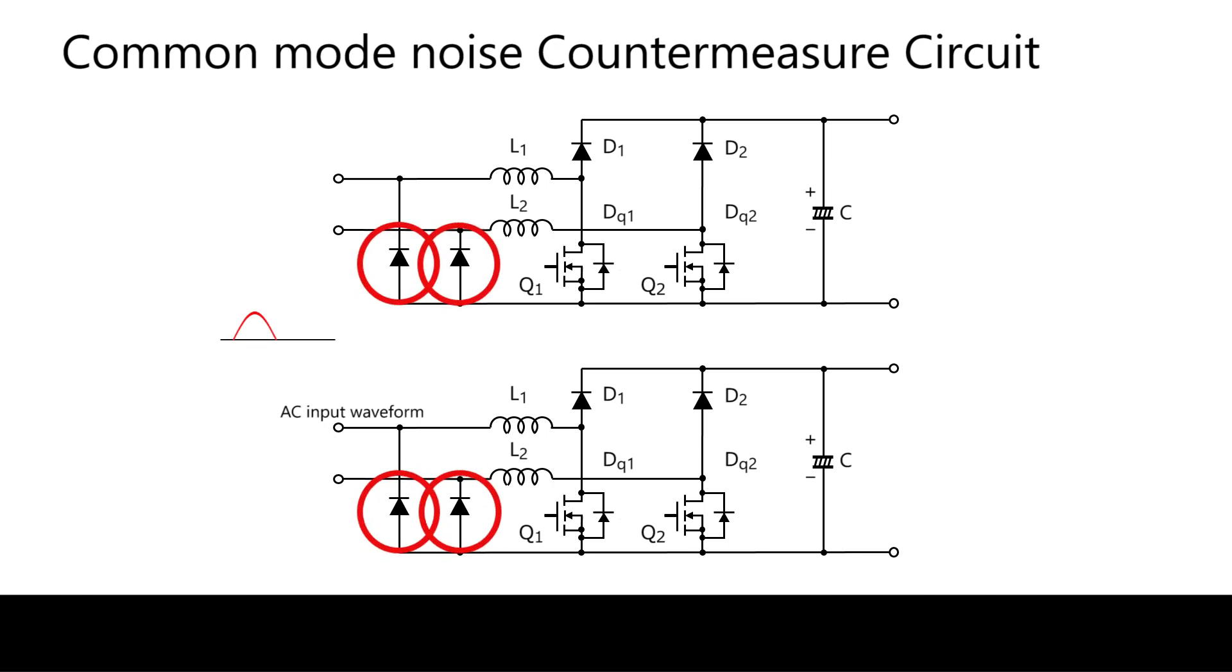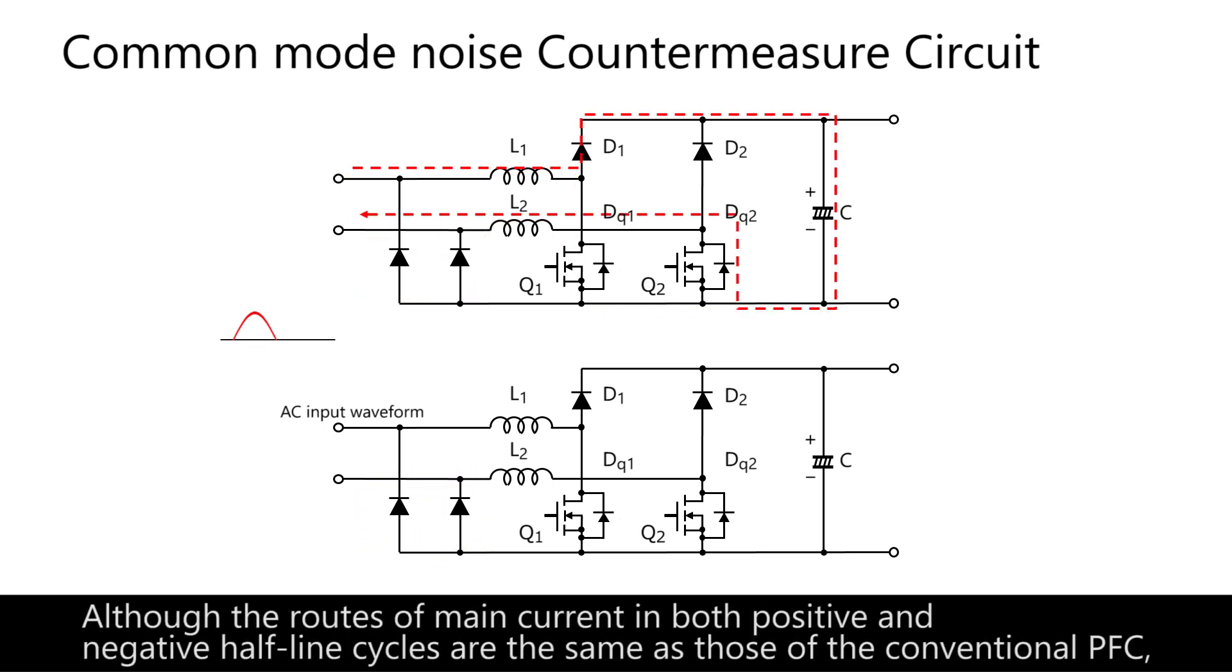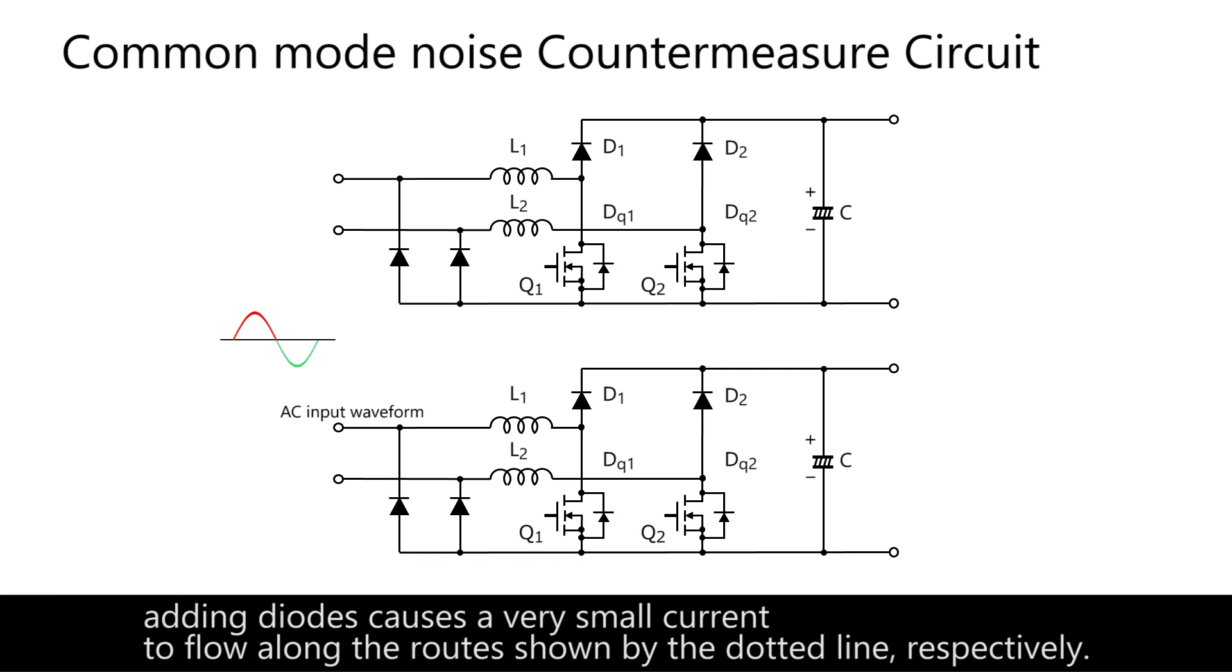To avoid this problem, diodes are added. Although the routes of main current in both positive and negative half-line cycles are the same as those of the conventional PFC, adding diodes causes a very small current to flow along the routes shown by the dotted line, respectively.